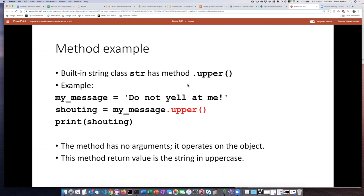If I create an instance of the string class and call that object my_message, then I can apply the method to that object by saying my_message.upper, and that will take the string, turn it into uppercase, and then return the value of the string in all uppercase, which I can then assign to another variable and print. So this method does not have any arguments. There isn't anything we have to pass in, and it operates on the object. It does produce a return value.